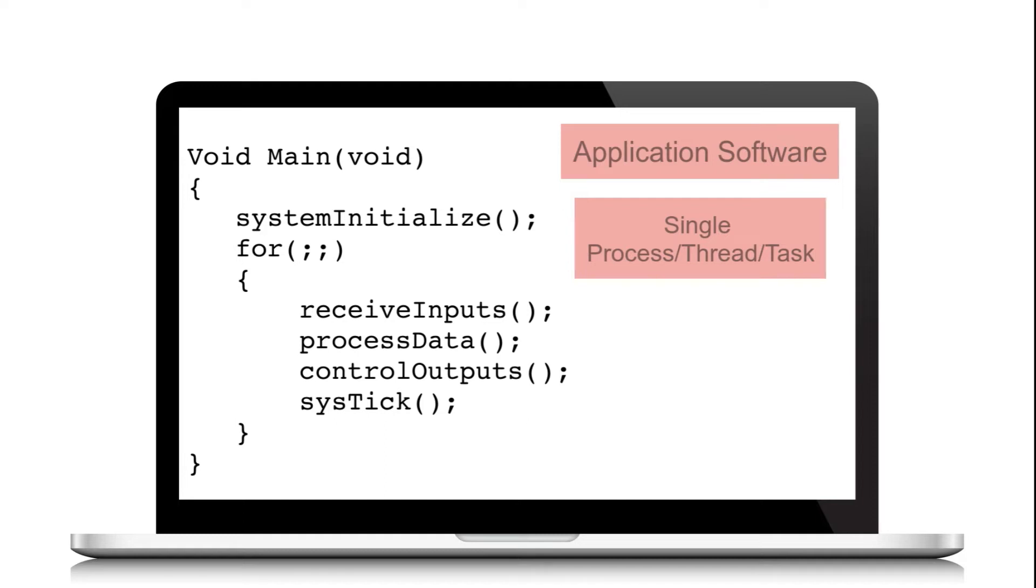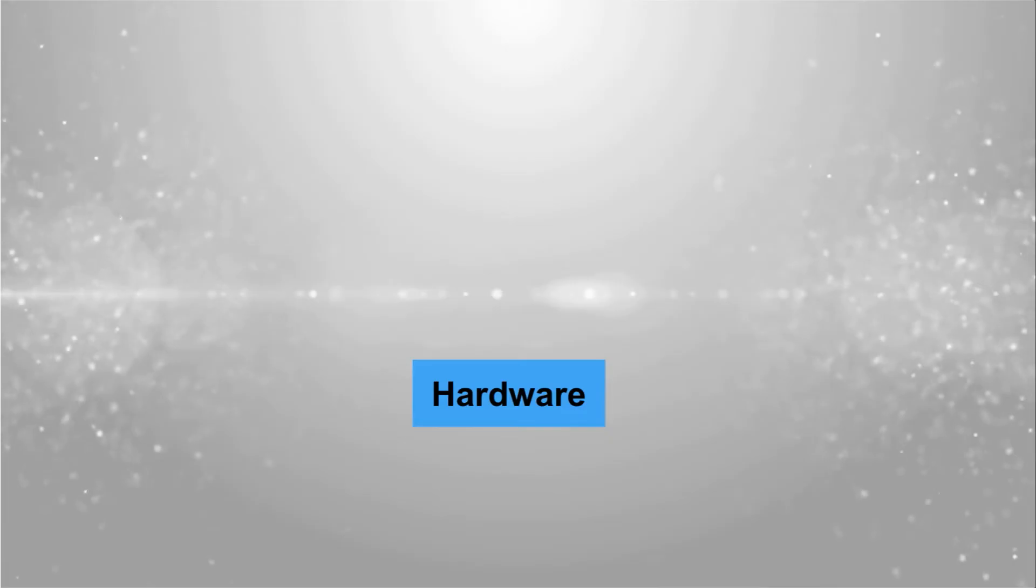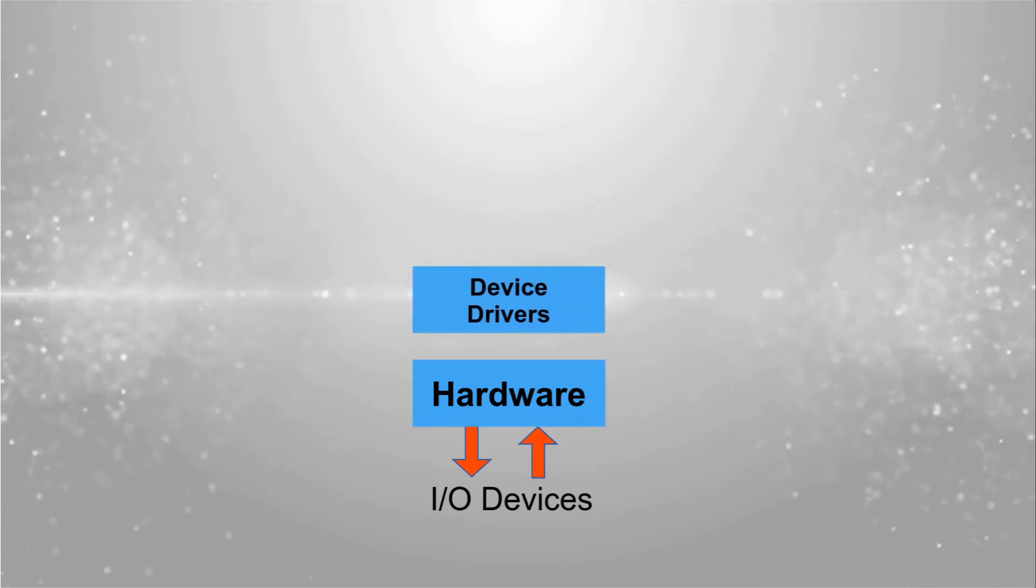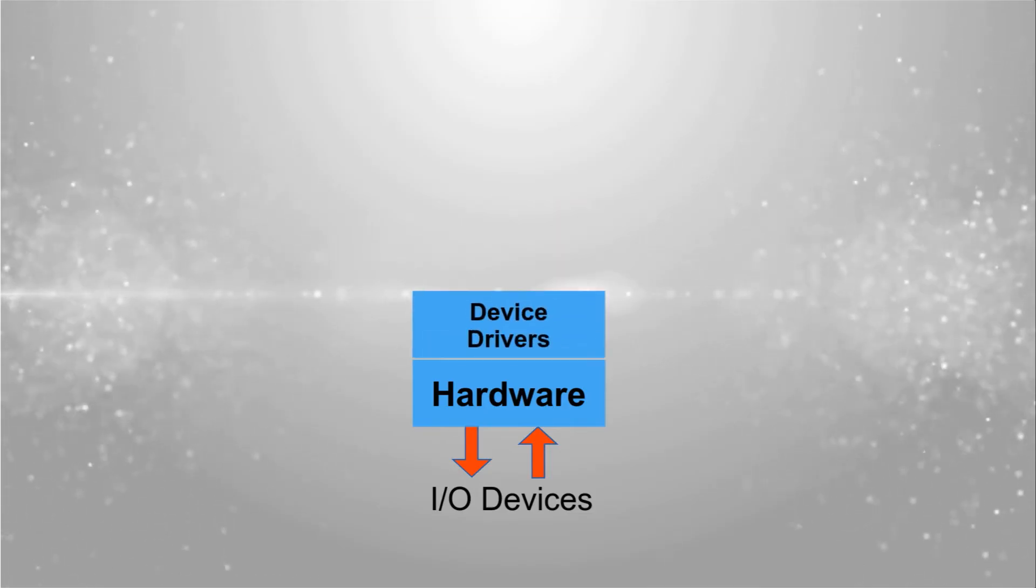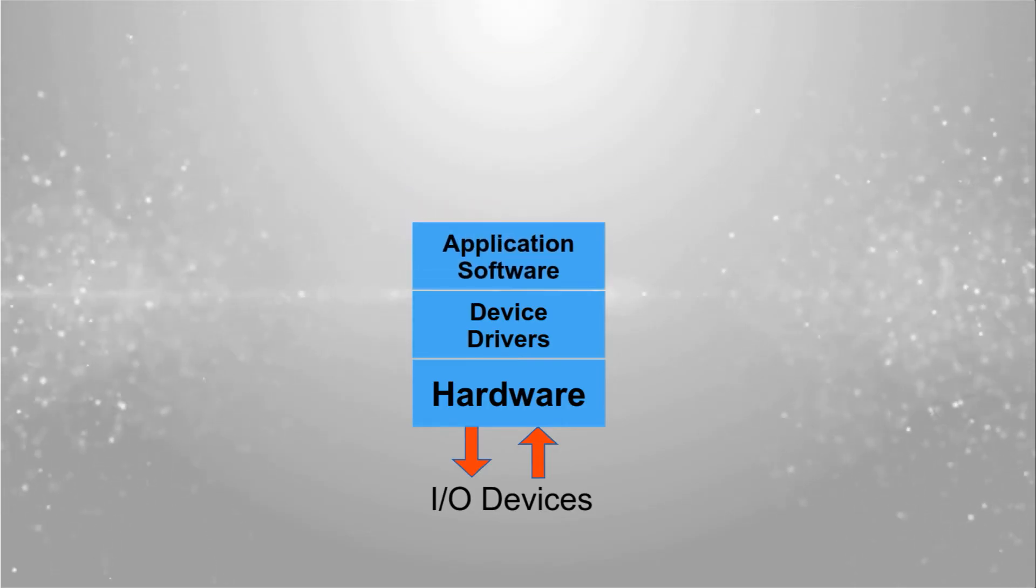Such a basic embedded system can be layered as hardware, I/O devices, device drivers which are embedded software modules to operate the hardware devices, and then application software which processes the different inputs and commands the outputs based on the application need.